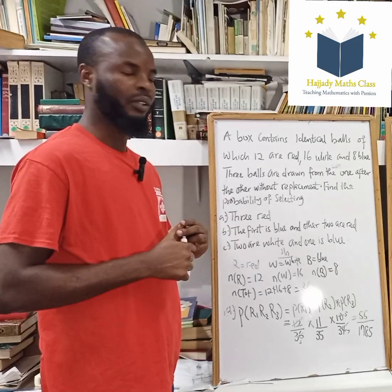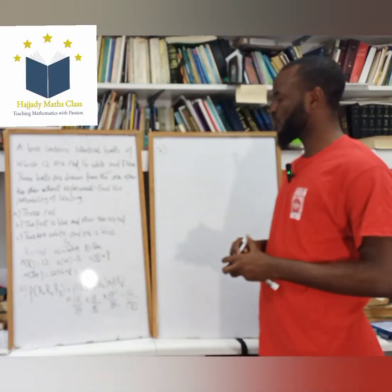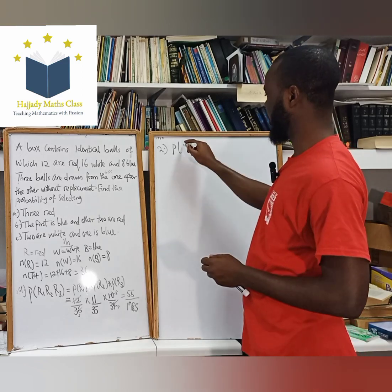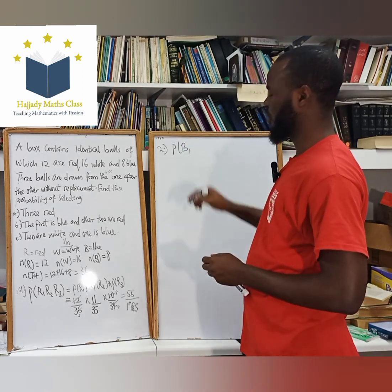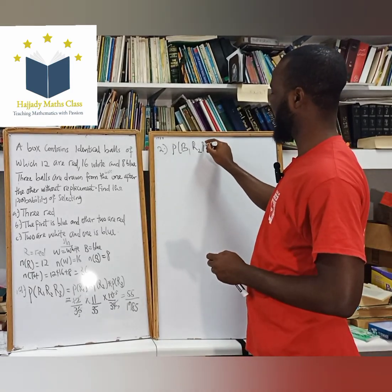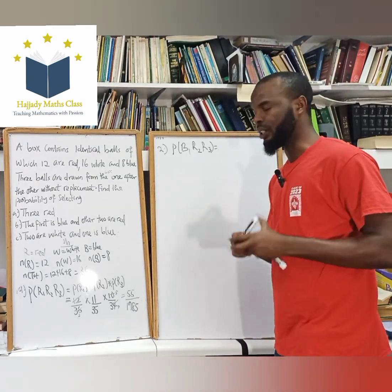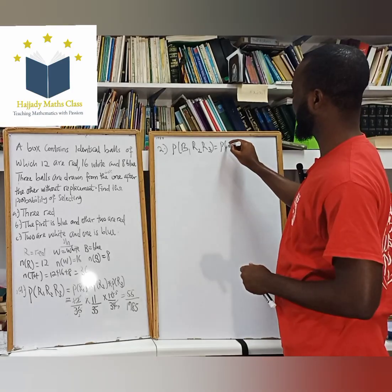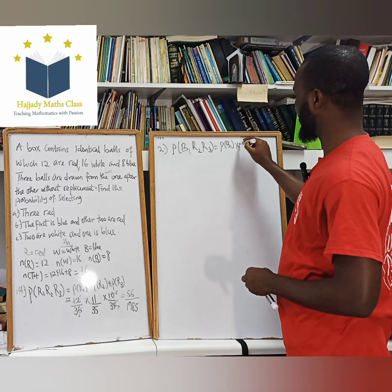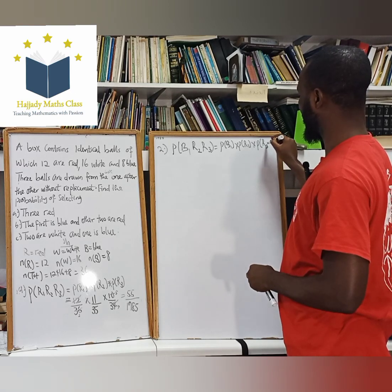Now let's go ahead and look at the second question. For the second question, it says that the first is blue and the other two are red. That is, the probability that the first ball you choose is blue, and the other two balls are red — the second is red and the third is also red. The arrangement is very clear in this regard. So we have the probability of blue multiplied by the probability that the next is red, multiplied by the probability that the third is also red.